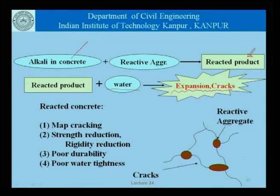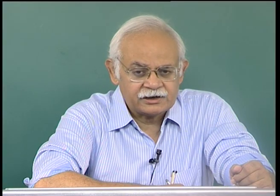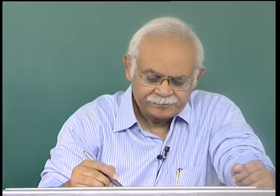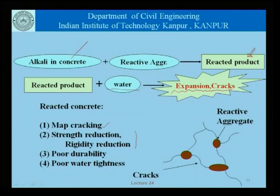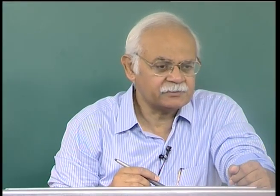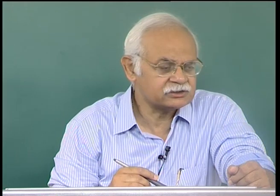In concrete that has undergone damage on account of alkali aggregate reaction, we can have map cracking — the kind of cracks seen in a concrete structure damaged by alkali aggregate reaction. We see strength reduction and a reduction in the modulus of elasticity of concrete as a result of the formation of these cracks. There is also the issue of poor durability; once these cracks are formed it can be argued that the structure is no longer serviceable.